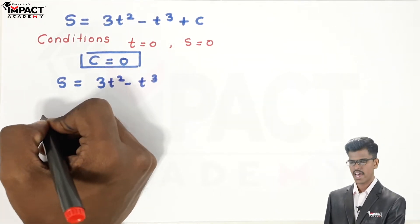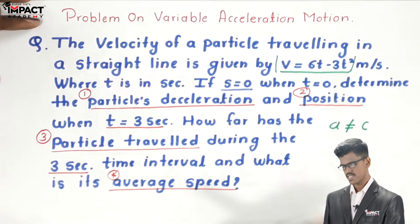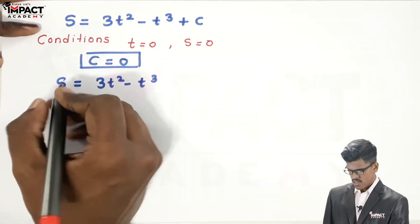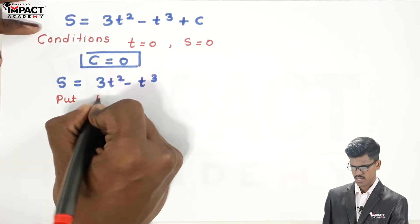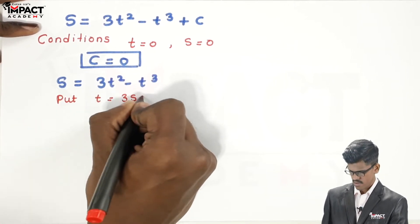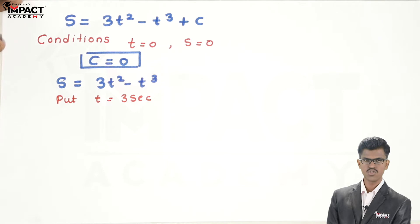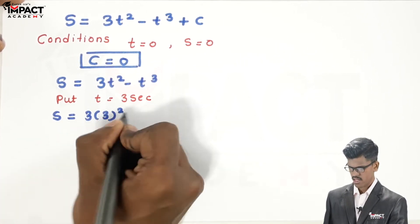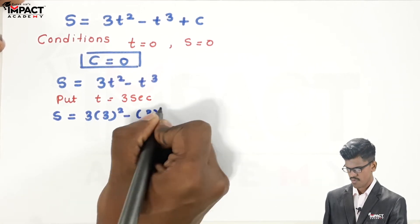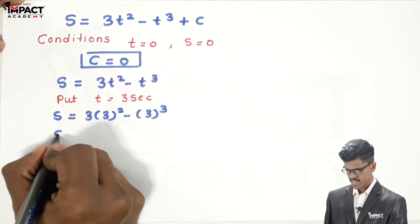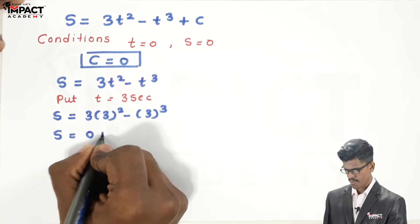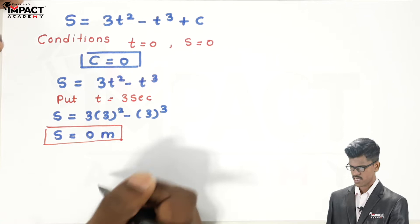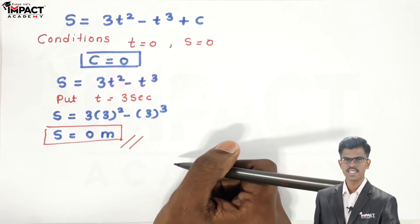They ask for the position of the particle when t equals 3 seconds. Substituting t equals 3: s equals 3 times 3 squared minus 3 cubed, which gives s equals 0 meters. That is the position of the particle when t equals 3 seconds.